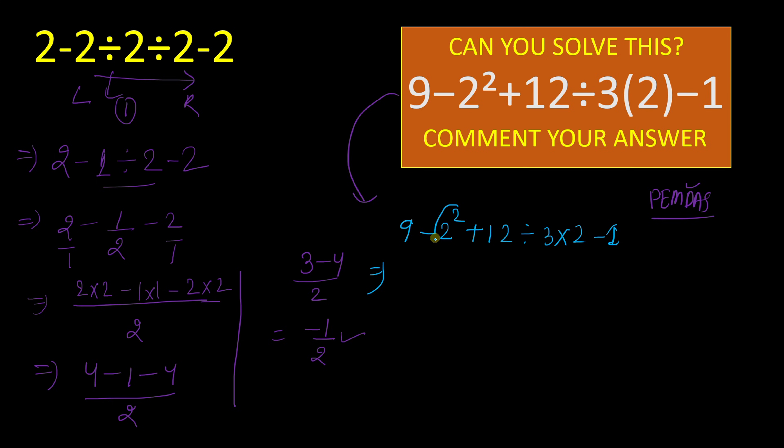Now go for this exponent part which is 2 squared which can be written as 4 simply. So we will write 9 minus 4 plus 12 divided by 3 times 2 minus 1.